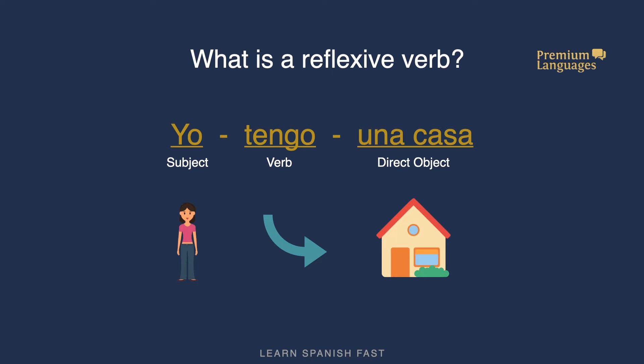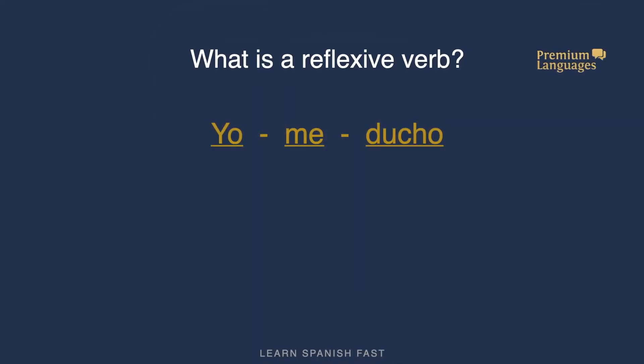Yo tengo una casa: subject, action, object. However, in a reflexive verb, the subject does an action onto himself. For instance, 'yo me ducho' would be the equivalent of 'I have a shower', or if we translate literally, 'I shower myself'.